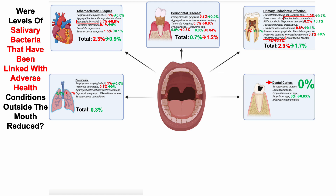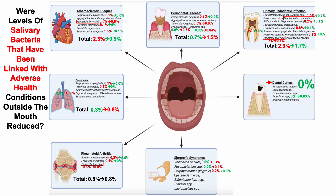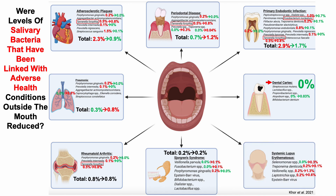Oral bacteria linked with pneumonia were 0.3% for the first test but increased to 0.8% for the second — going in the wrong direction, so I need to keep an eye on that. Salivary bacteria linked with rheumatoid arthritis were 0.8% for both tests — no change — and again, all of that 0.8% in the second test comes exclusively from Tannerella forsythia. For Sjögren's syndrome, both tests were 0.2%. For lupus, an autoimmune disease, bacteria increased from 0.7% to 2.3%, and I don't yet have a strategy to address that.